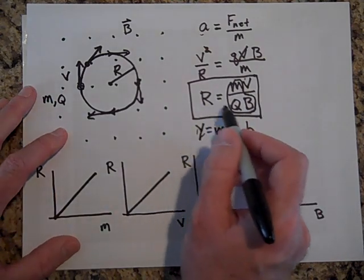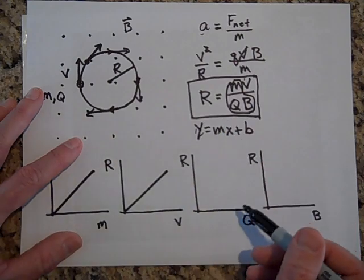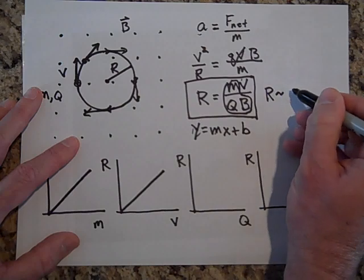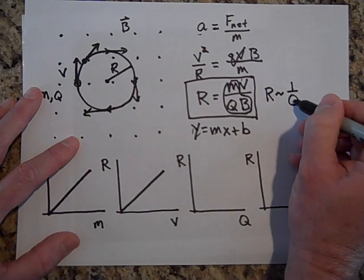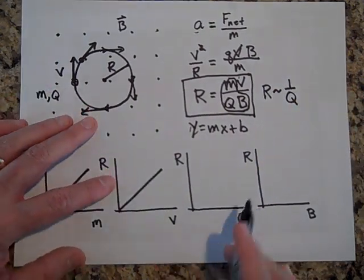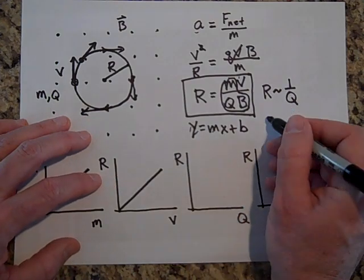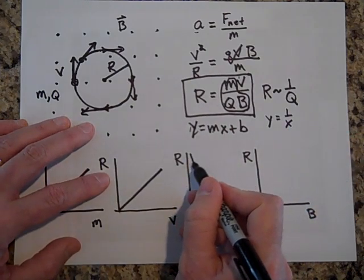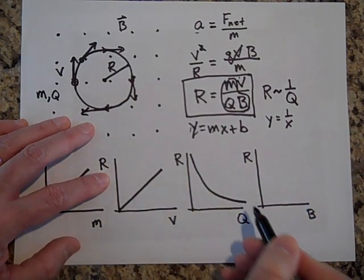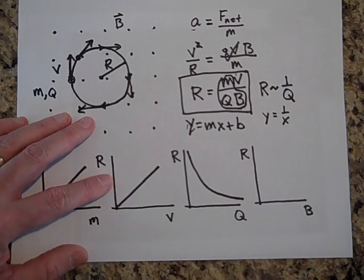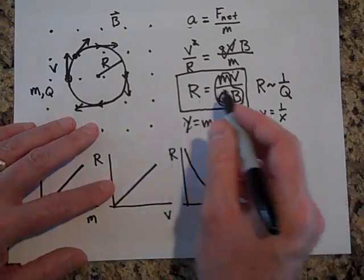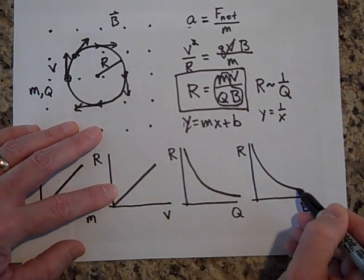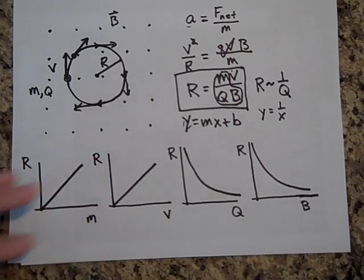Okay, well, how is R related to Q? It looks like R is inversely proportional to Q. So R is inversely proportional to Q. Okay, so what that means then is you know what a Y is equal to 1 over X graph looks like. It goes like this. That's what happens to that graph. And same thing with R is inversely proportional to B. This is what an inversely proportional graph looks like.